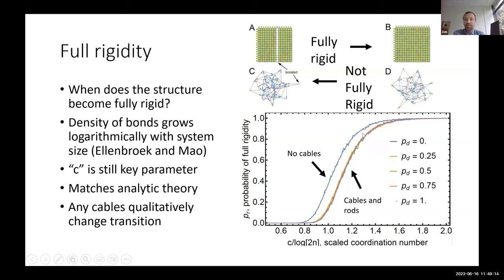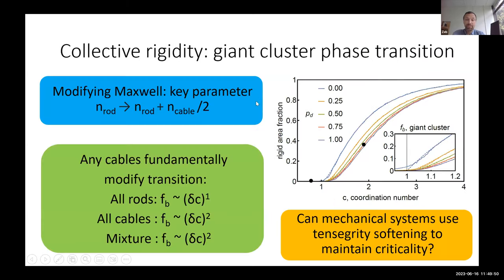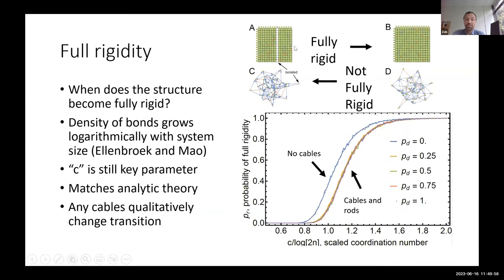A key observation here is that if we compare the situation in which there are no cables to the situation in which there's all cables or there's a mixture of rods and cables, systems that have a mixture of rods and cables behave essentially exactly like systems that have only cables added in. The system that has all rods is the odd person out. So once again, the addition of any amount of cables is enough to strongly modify the behavior of this full rigidity transition. Just to emphasize here, this is where we have collective rigidity emerge at all, where we start to have large regions of the system that are rigid. This is where the system is 100% rigid. In both cases, cables count as half a rod for determining the nature of the transition. And we have that the addition of cables is enough to qualitatively soften the transition.